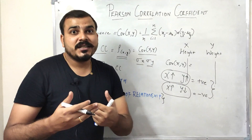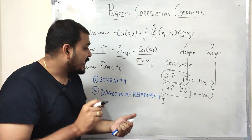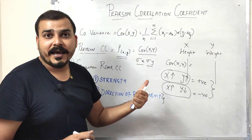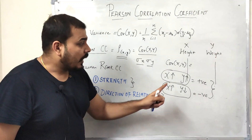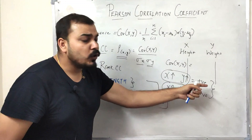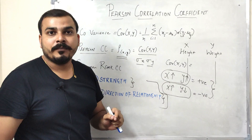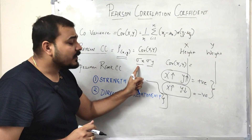In covariance, we find only the direction of the relationship, but we don't know how much positive or how much negative it is — it could be any infinite value. Pearson correlation coefficient addresses this: based on the variance of X and Y, it tells us the strength of the correlation — how strongly the two variables are correlated — as well as the direction.